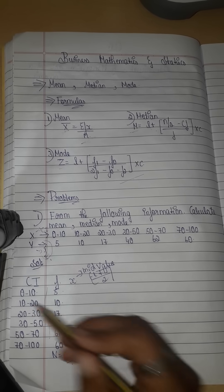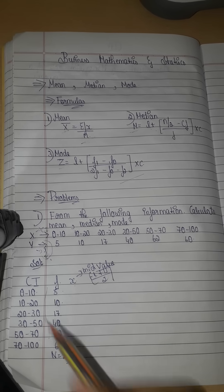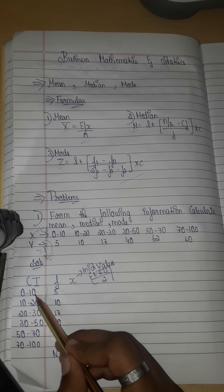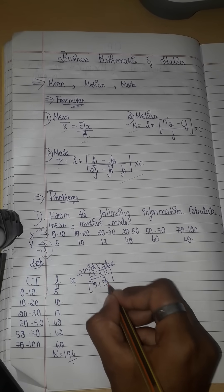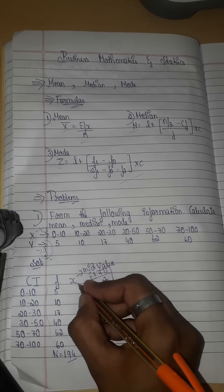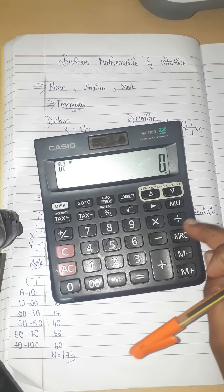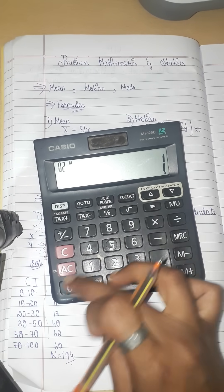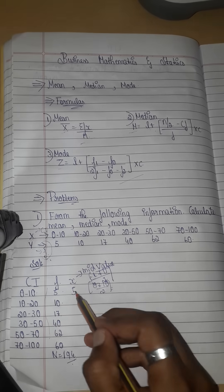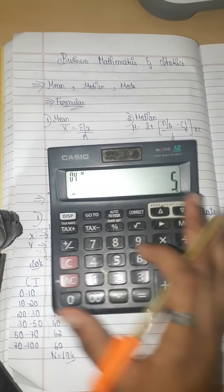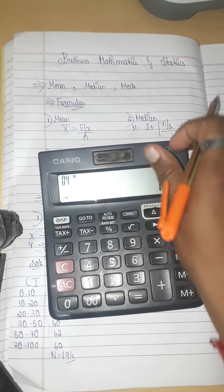Now we have class intervals. The lower limit is on the left side and the upper limit is on the right side. To find the first mid-value: 0 plus 10 divided by 2 equals 5. So the mid-value is 5. Next: 10 plus 20 divided by 2 equals 15, so mid-value is 15.